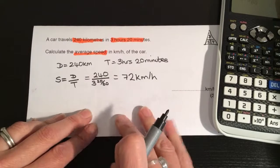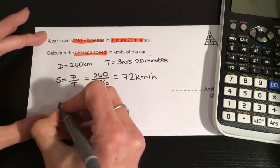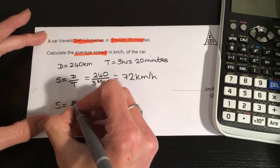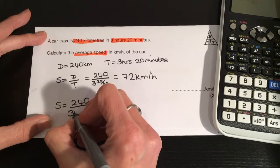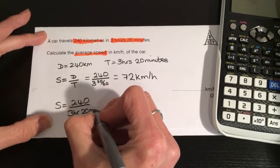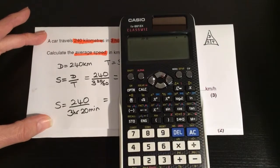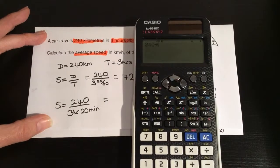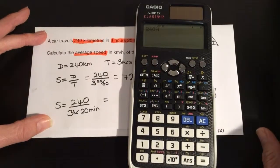Now the other alternative is to use a different button on the calculator. It's 3 hours and 20 minutes. We do that by 240 divided by—now we're going to use a different button. We're going to use this button here. When we put this in, it separates the hours from the minutes in our calculation.